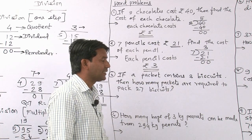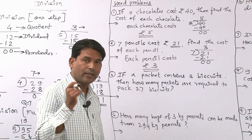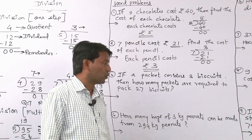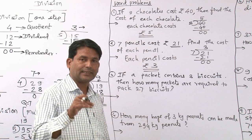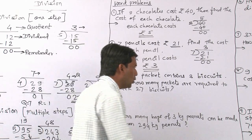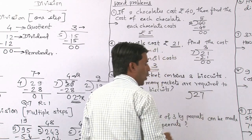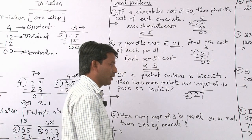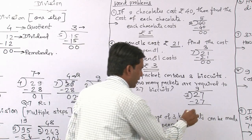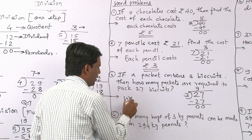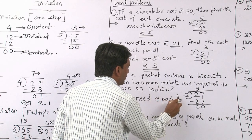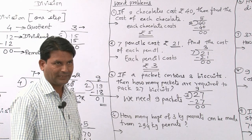Third one: if a packet contains 3 biscuits, how many packets are required to pack 27 biscuits? We have to put 3 biscuits in one packet. Again we do division: 27 divided by 3. Counting the 3 table 9 times gives us 27. So we need 9 packets to pack 27 biscuits.